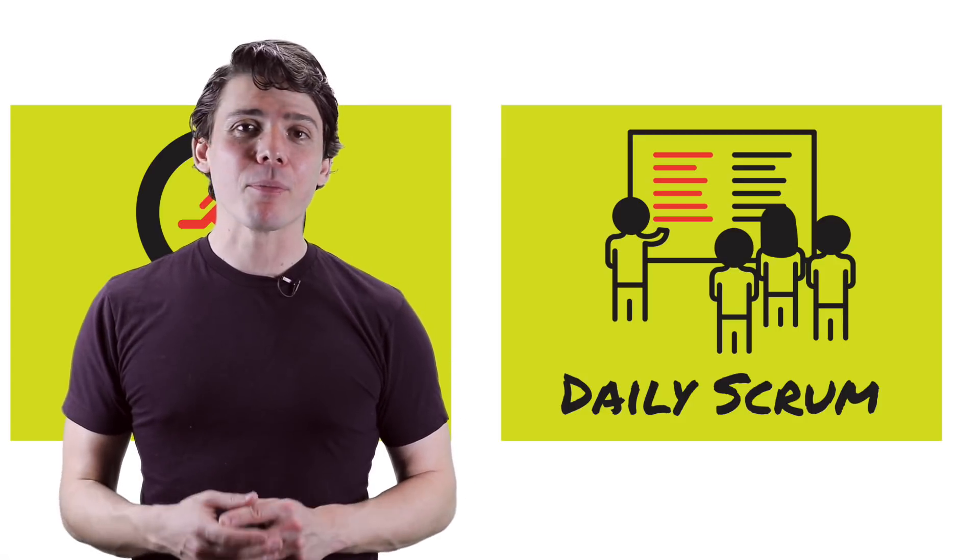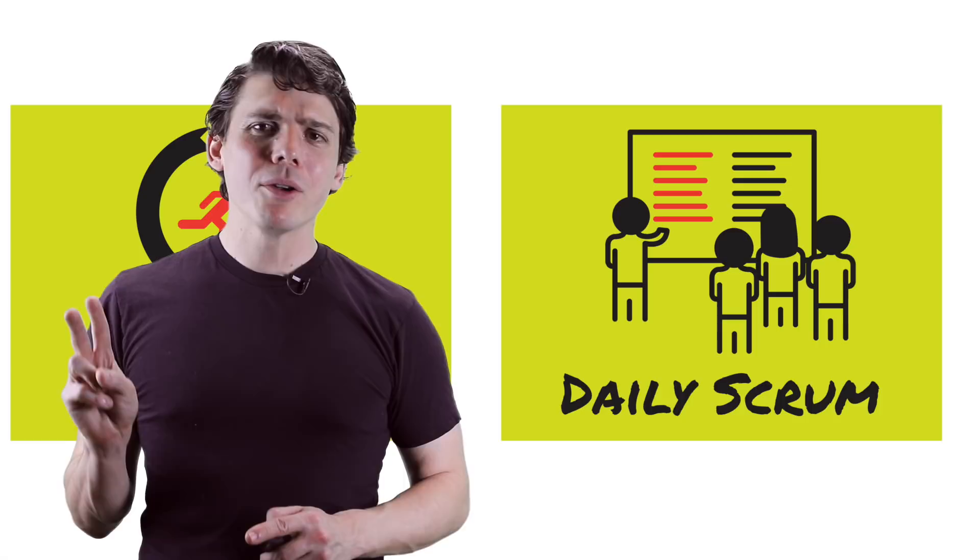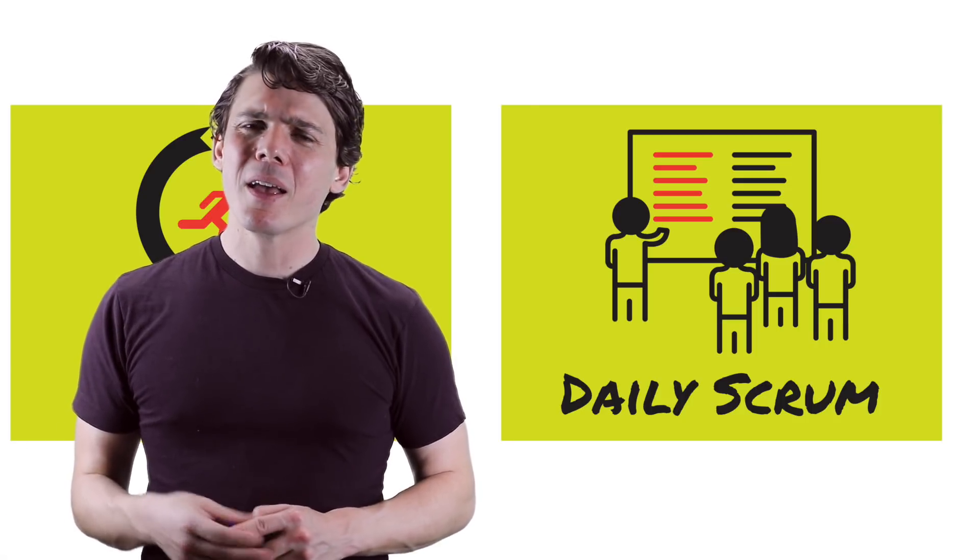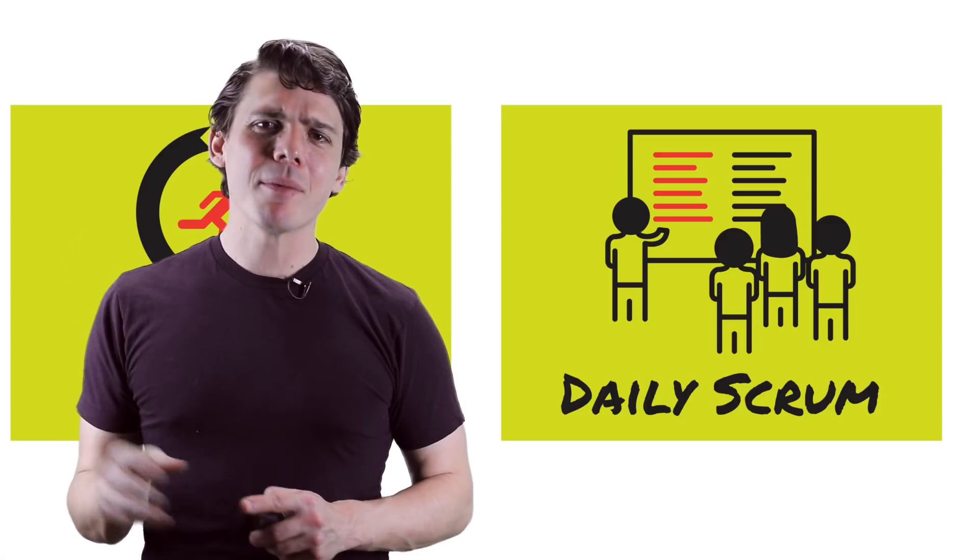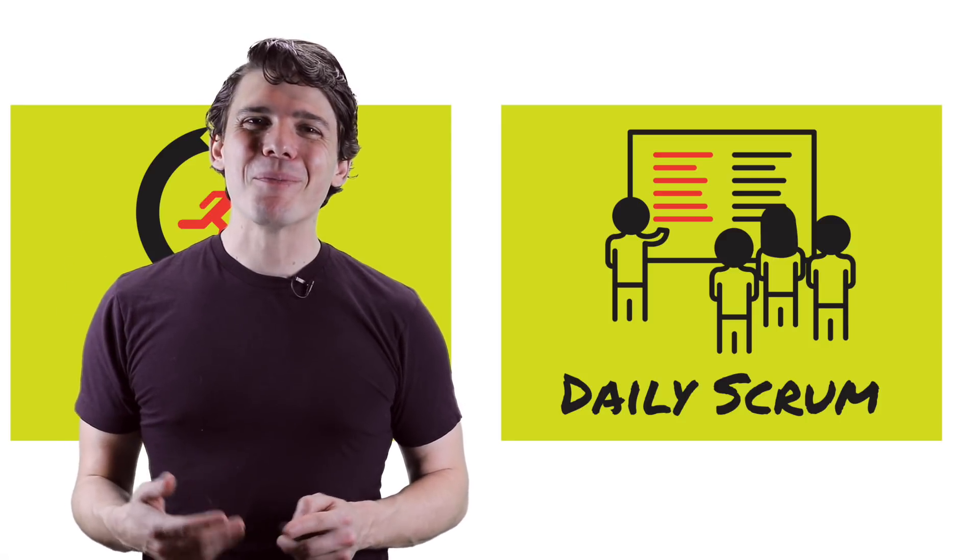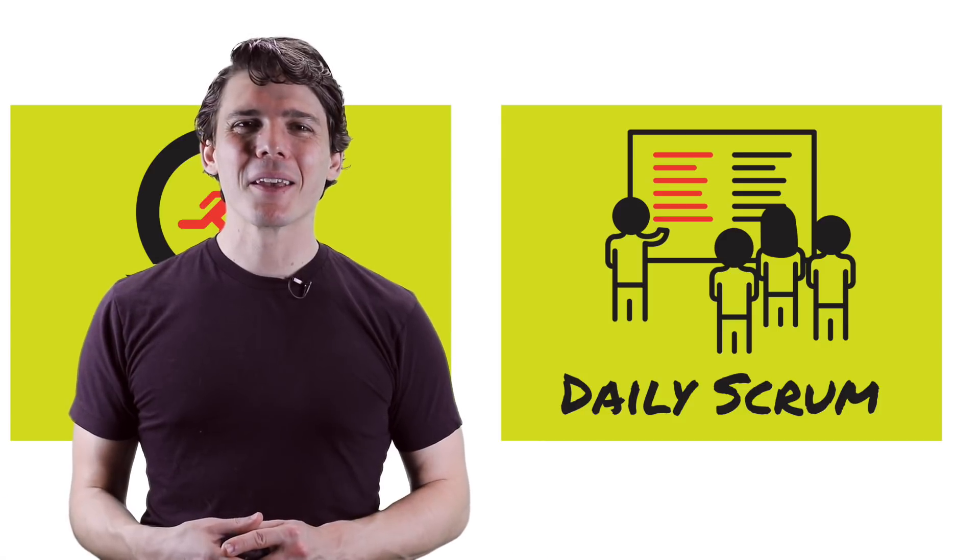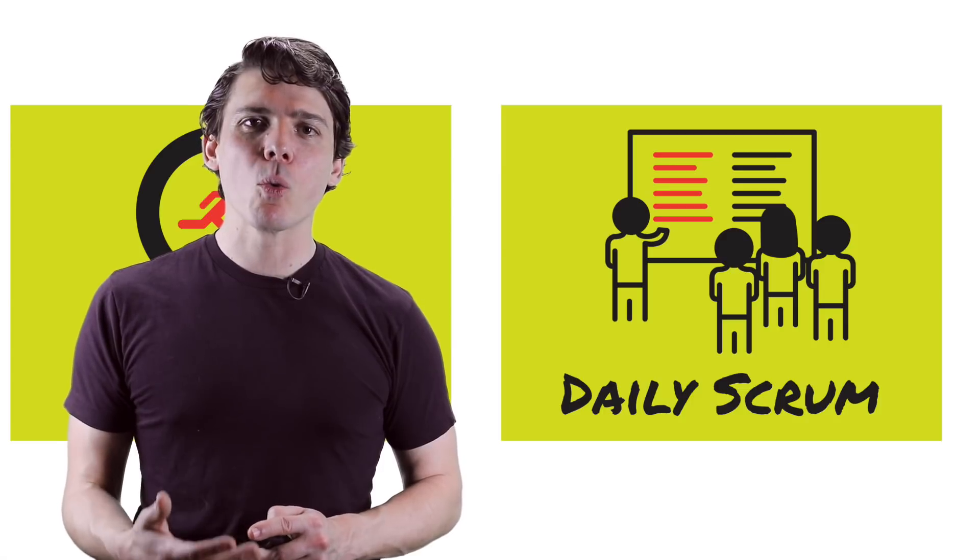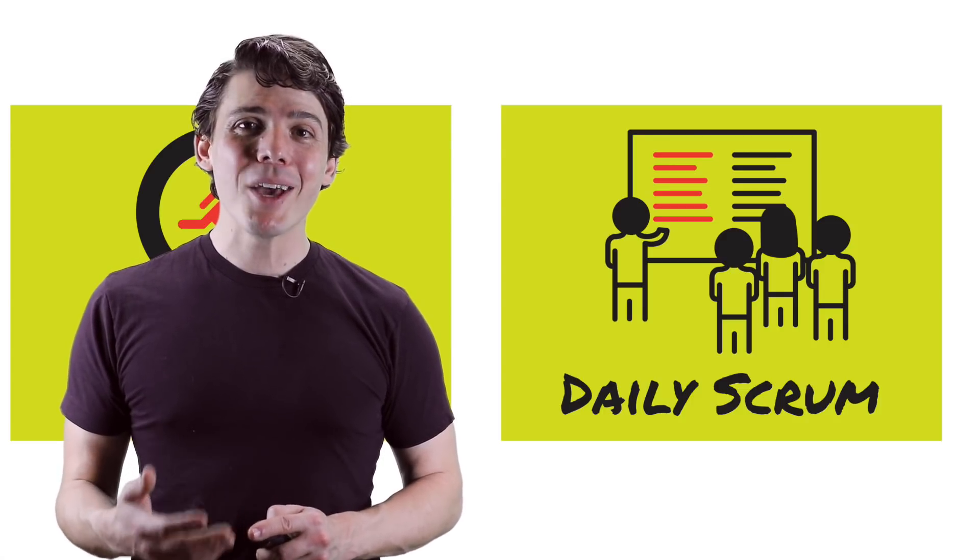During the daily Scrum, each development team member typically answers three questions: What did I do yesterday that will help our team meet our sprint goal? What will I do today that will help our team meet our sprint goal? And do I see any impediments or blockers that will prevent me or the team from meeting our sprint goal?